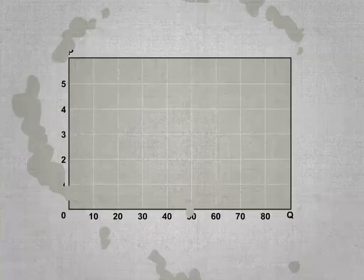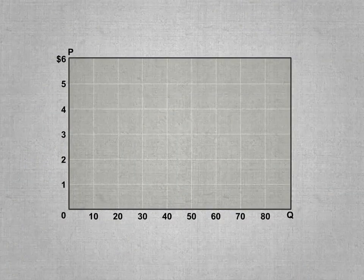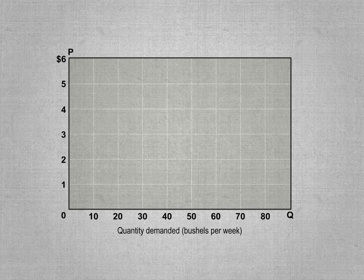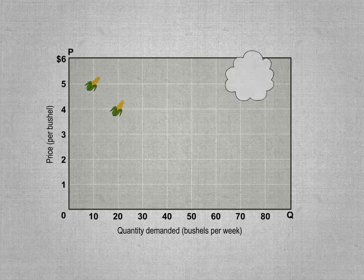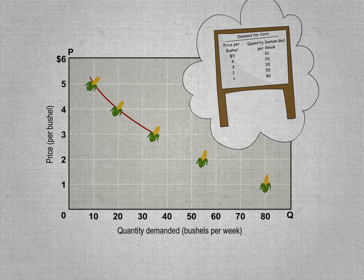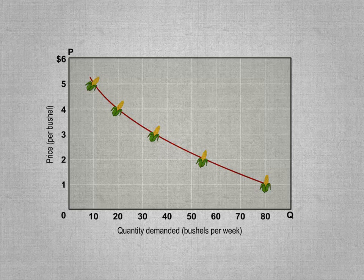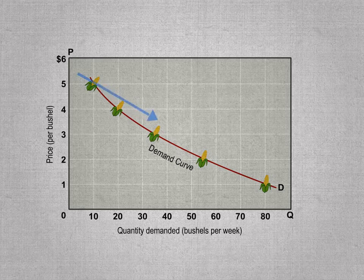Let's represent the relationship between the price of corn and an individual's demand for this corn on a simple graph. Let's measure quantity demanded on the horizontal axis and price on the vertical axis. Let's plot and connect the five price-quantity data points listed in the table with a smooth curve labeled D. This curve is what we call a demand curve.